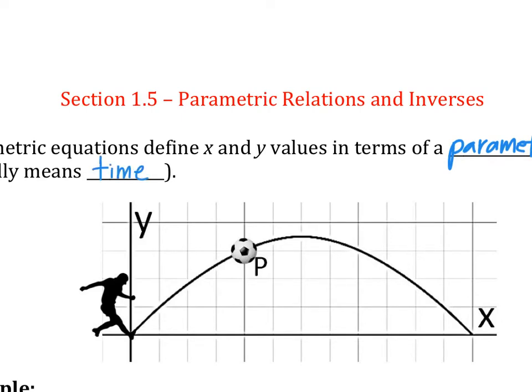So what does that mean? Usually when you are talking about position in space, it's always x and y - x is the horizontal, y is the vertical. We don't actually think about the fact that x and y could actually be moving according to time.